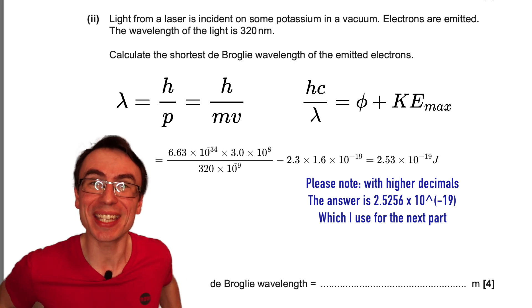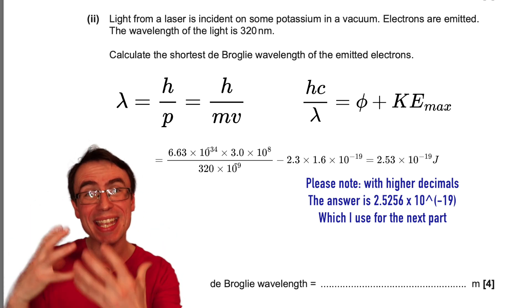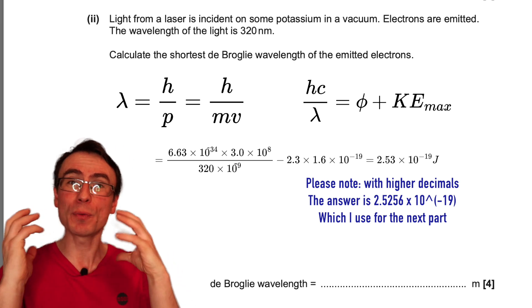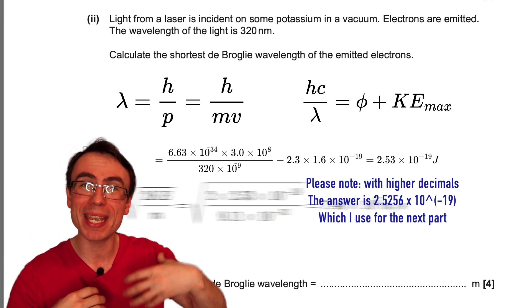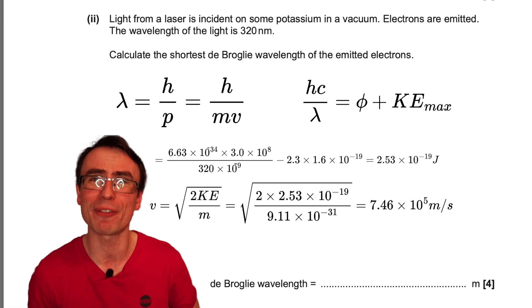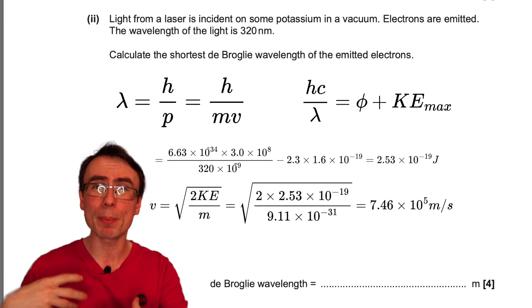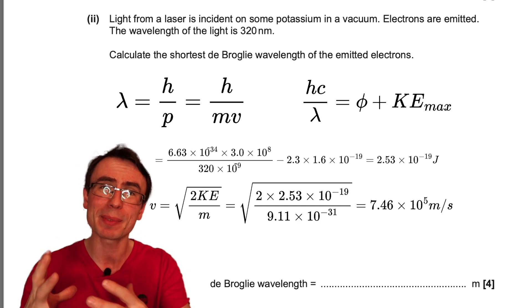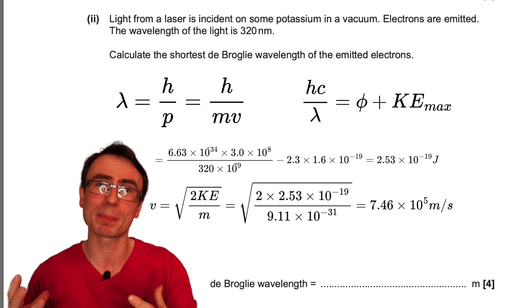And if we have the kinetic energy of the electron we have its velocity and if we rearrange KE being equal to a half mv squared for the velocity, substitute all the values, we're going to get around 7.46 times 10 to the power of 5 meters per second.